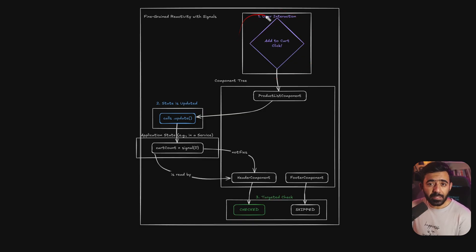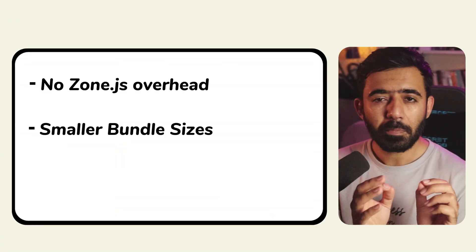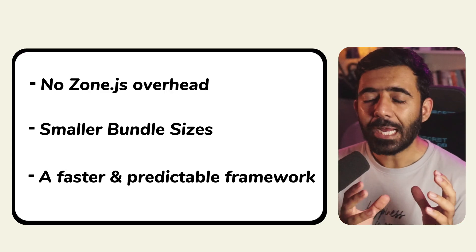Now let's look at the world of Angular Signals. An 'Add to Cart' button is clicked, a signal gets updated in a particular service, and because the header component's template is the only one using this signal, it is the only one that gets checked. The footer component and other components get skipped. This precision unlocks the future of Angular performance — signals tell Angular exactly what needs to be checked, meaning no Zone.js overhead, smaller bundle sizes, and a faster, more predictable framework. Neglecting this is now choosing to be left behind.